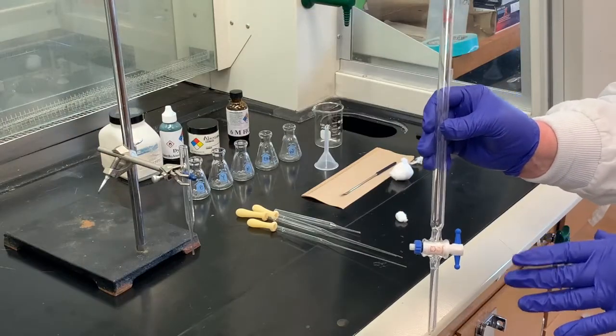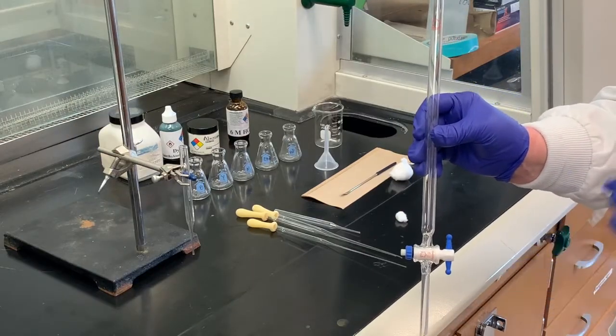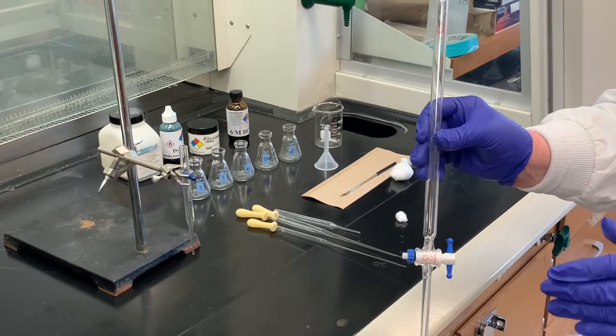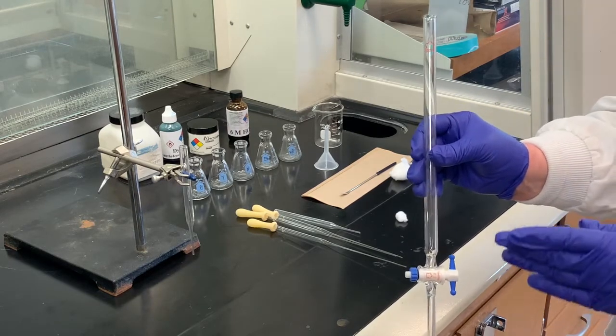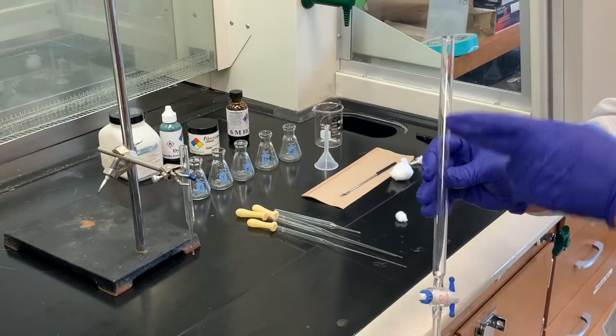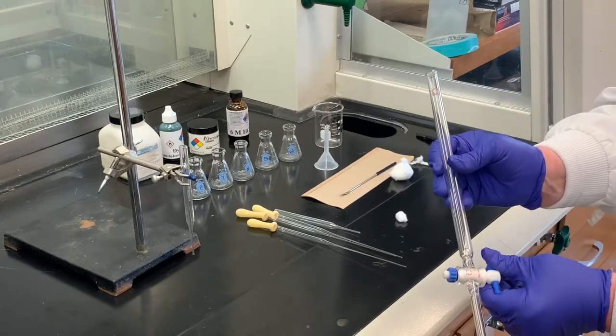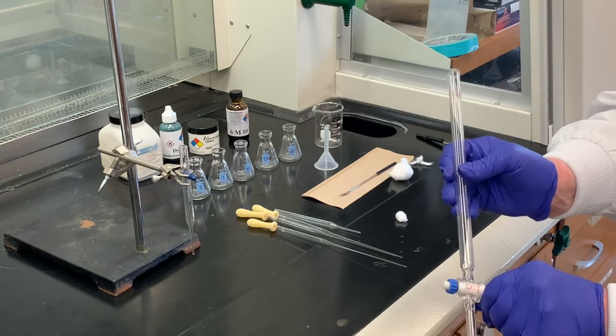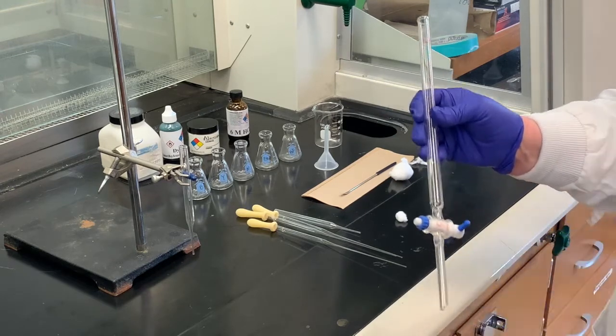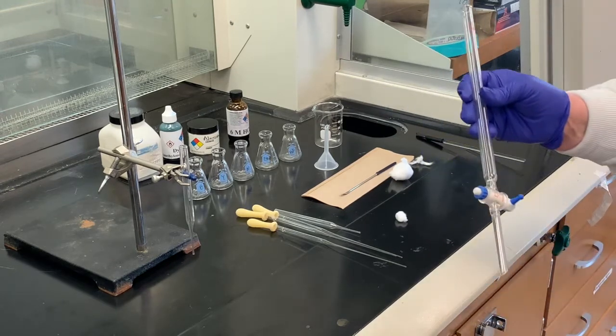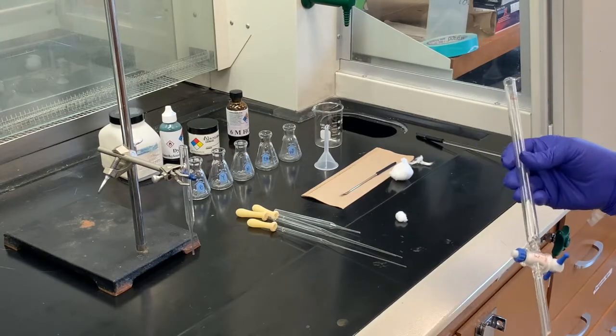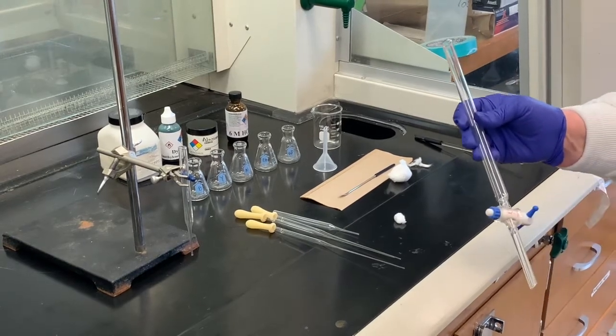Before we get started, I wanted to give you an idea of what a traditional chromatography column looks like. It looks very similar to a burette, although you'll notice there's no graduation marks here. There is a stopcock. And typically, when you separate things by column chromatography, just to compare thin layer chromatography, which is what we did in the previous experiment compared to column chromatography.